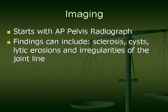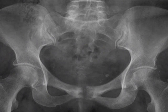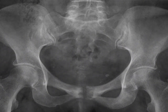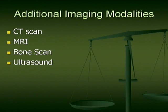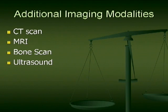The initial workup from an imaging standpoint should start with an AP pelvis. Findings may include sclerosis, cyst formation, and irregularity of the joint line. If you're struggling with a diagnostic dilemma, additional imaging modalities include a CT scan, MRI, bone scan, or if you're more concerned about a sportsman's hernia, an ultrasound.